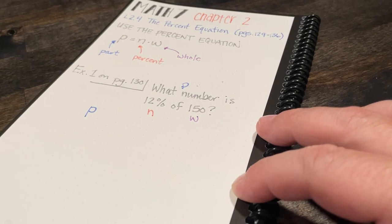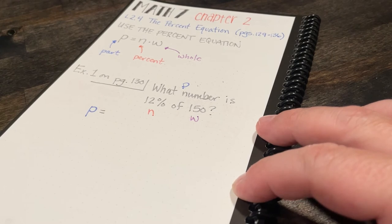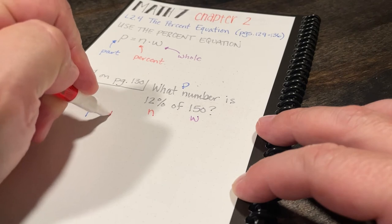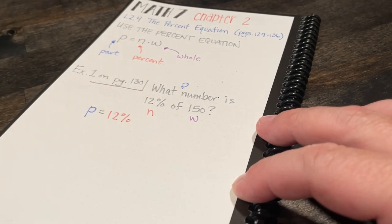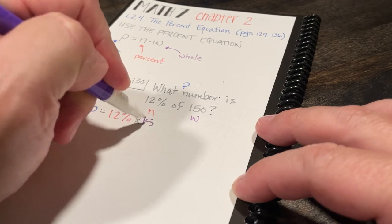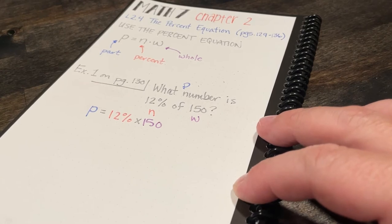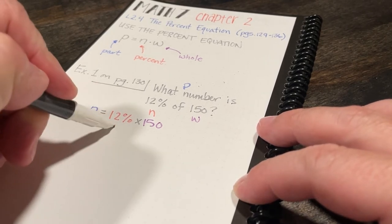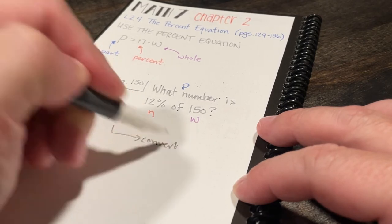So I'm going to start off by rewriting the percent equation. Part equals number times the whole. So I don't know what the part is, but I do know what my percent is, and I do know what my whole is. Now one of the things I want to do is to convert my percent to a decimal.